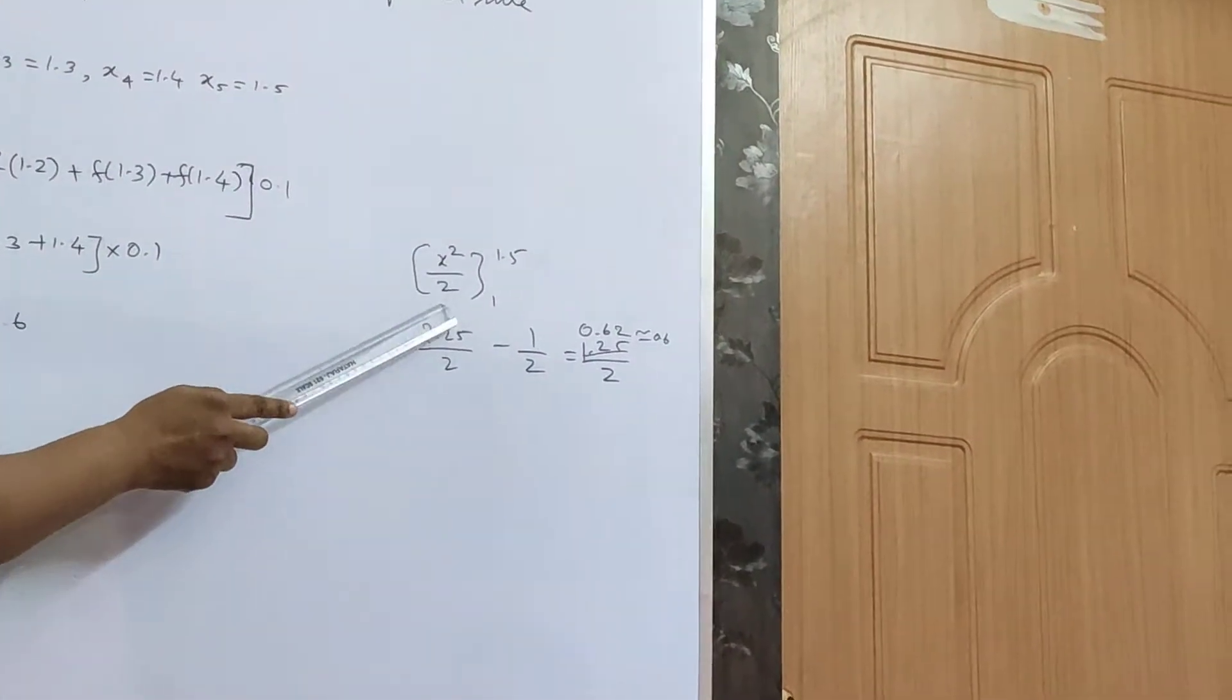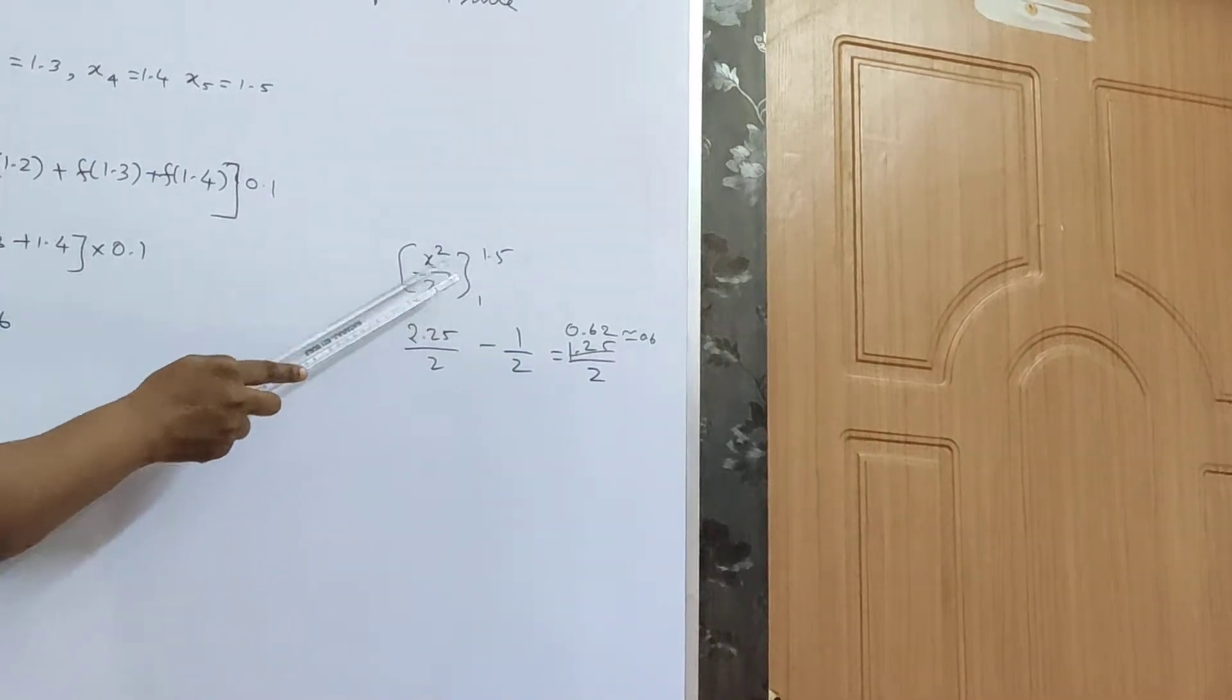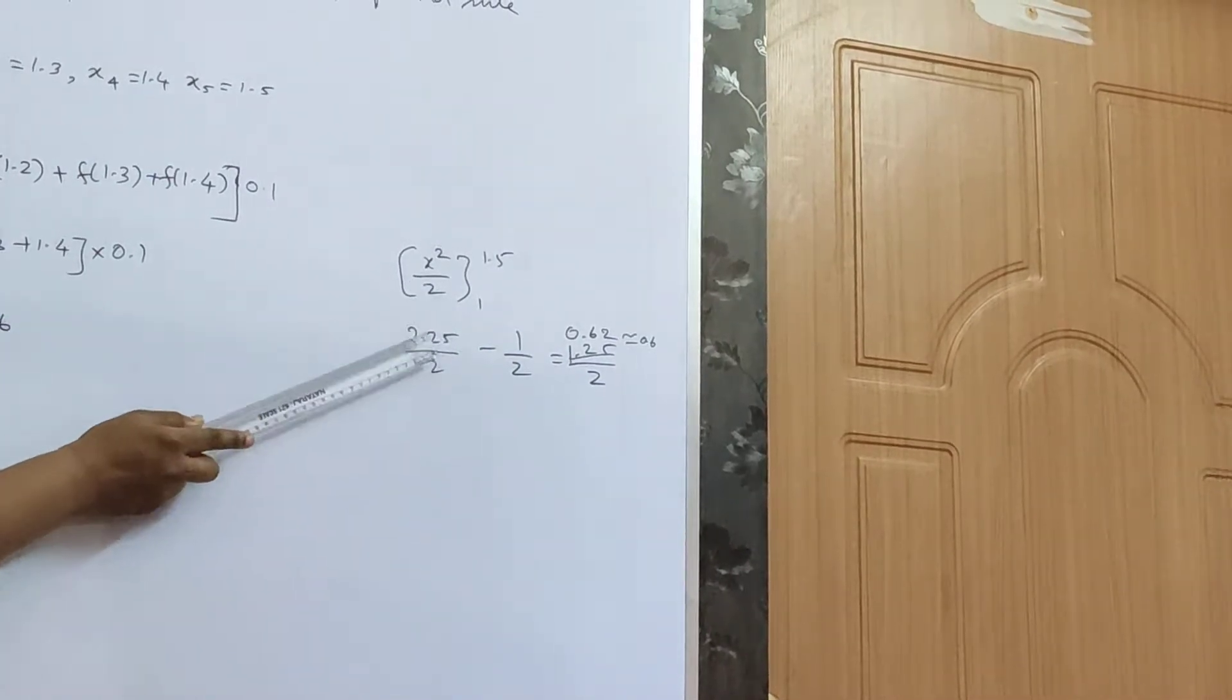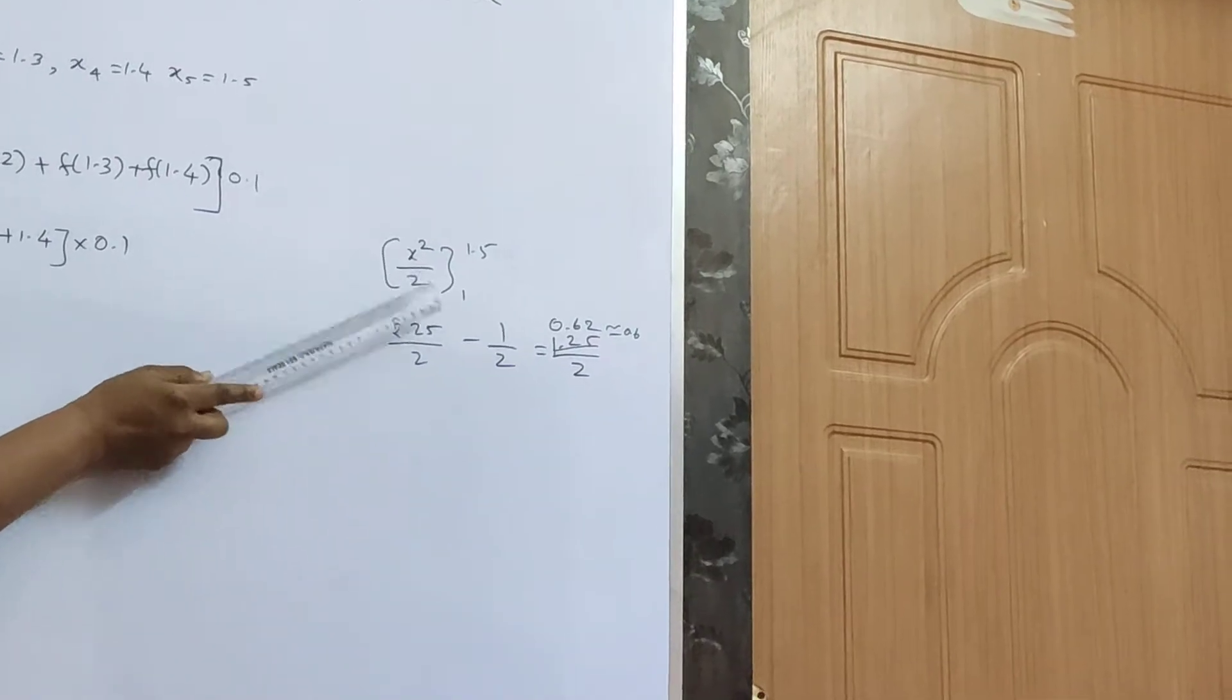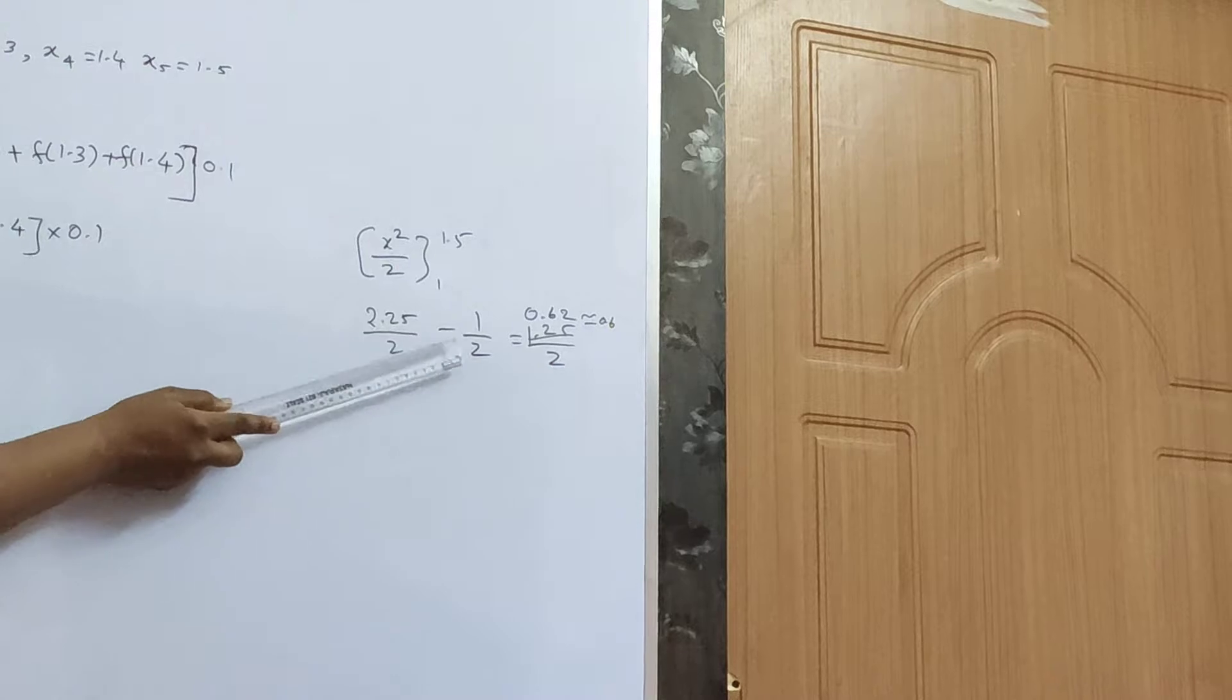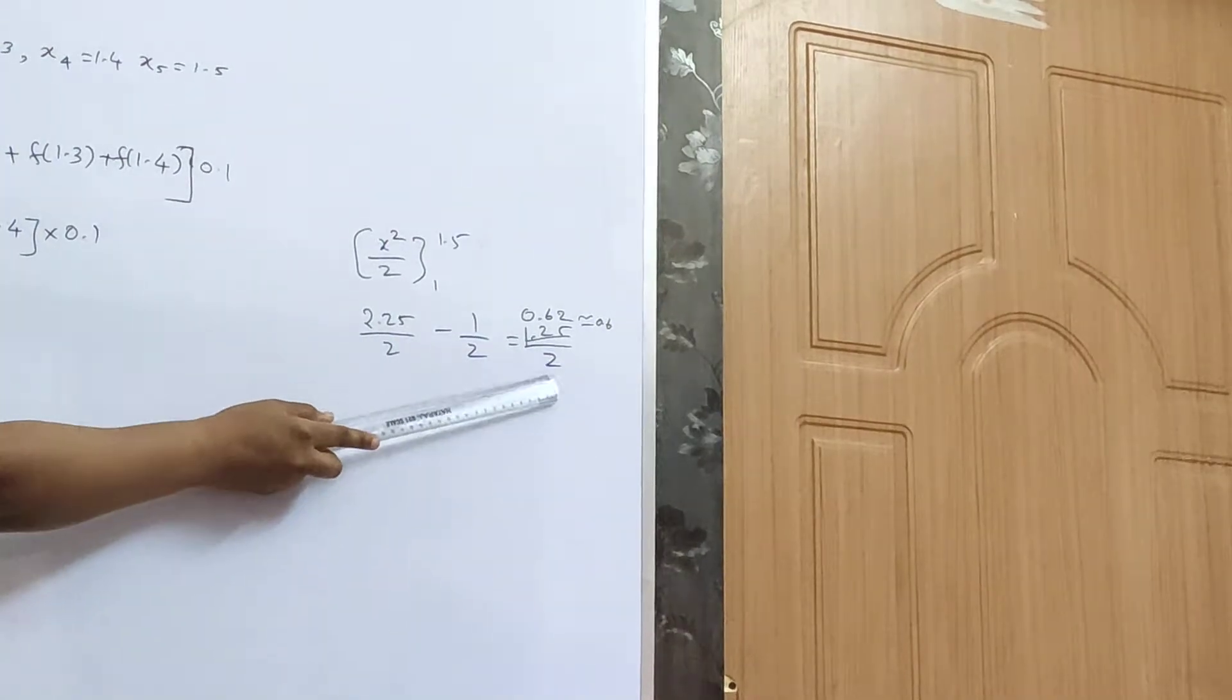The exact value from the formula is 1.5 squared, which is 2.25 by 2, minus lower limit 1, which equals 1 by 2. So 2.25 minus 1 is 1.25 by 2.